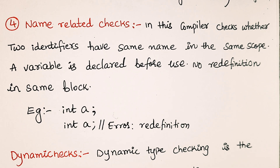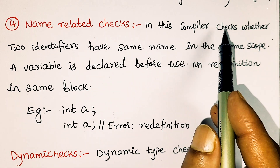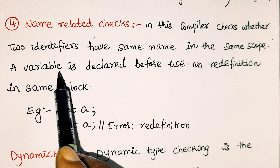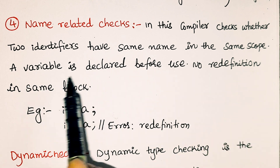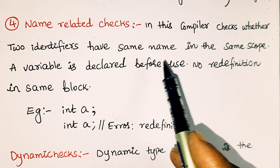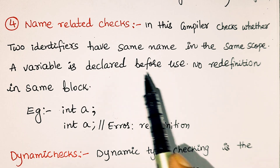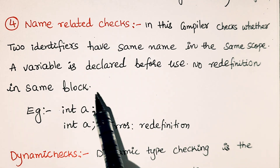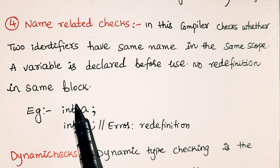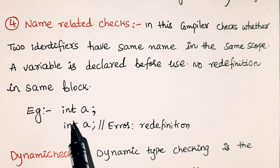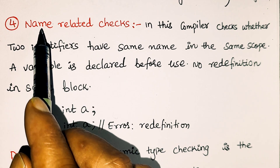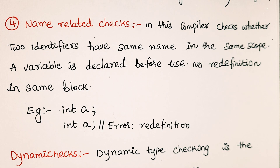The fourth static check is the name-related check. The compiler checks whether two identifiers have the same name in the same scope — a variable must be declared before use and cannot be redefined in the same block. For example, declaring 'int a' twice in the same scope causes a compile-time error.